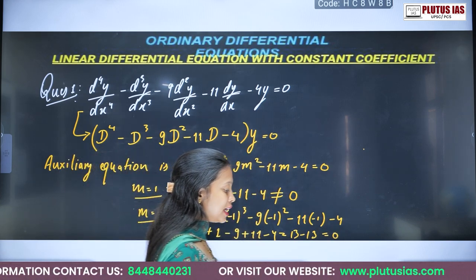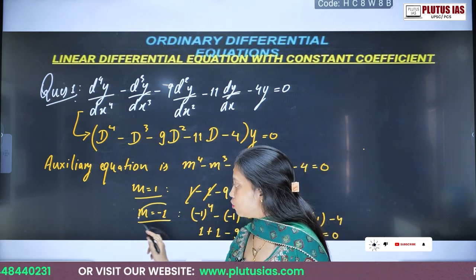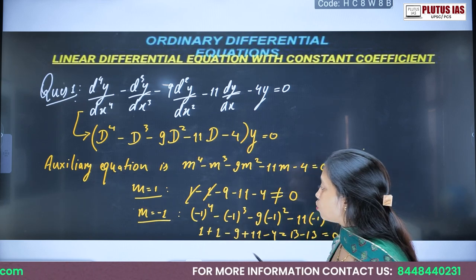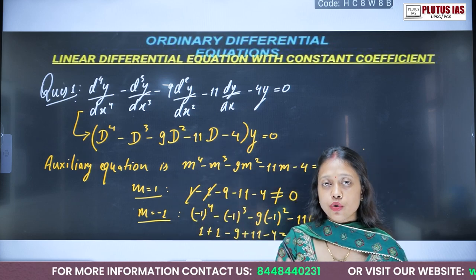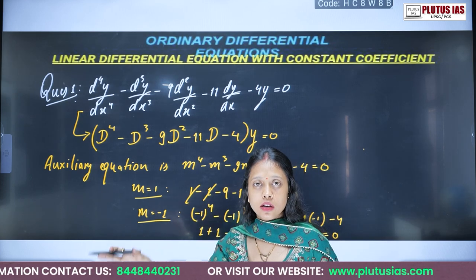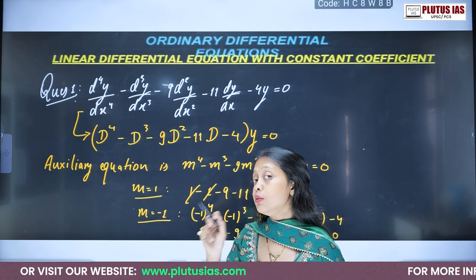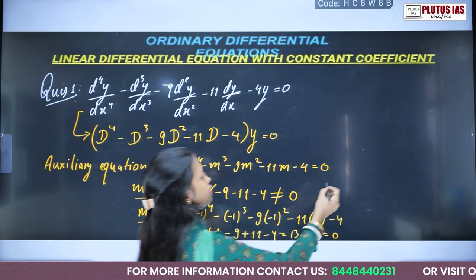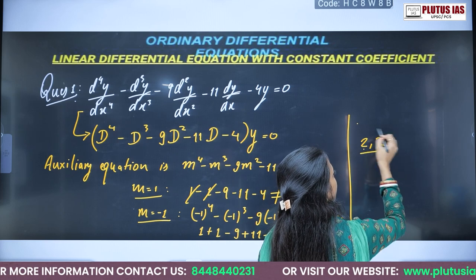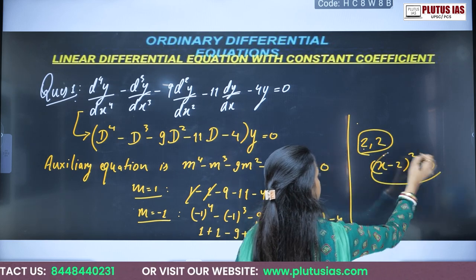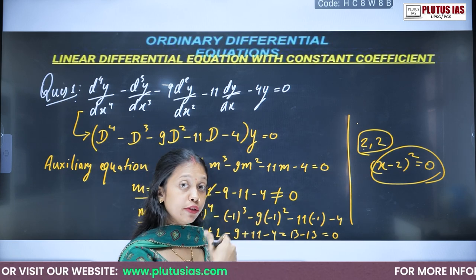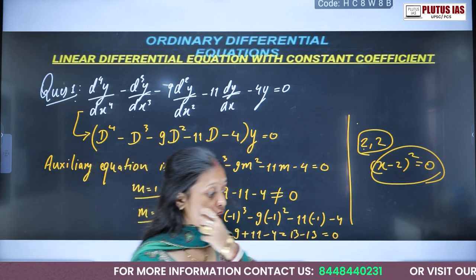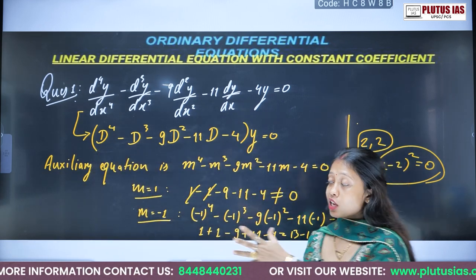Getting one zero is not enough — it's a fourth-degree equation, so I need three more roots. Before trying other numbers like 2 or minus 2, check whether minus 1 is a repeated root. Sometimes even a quadratic equation can have repeated roots — like x minus 2 whole squared gives root 2 twice. So it doesn't mean I'll have four different roots. To check for a repeated root, differentiate the polynomial with respect to m.